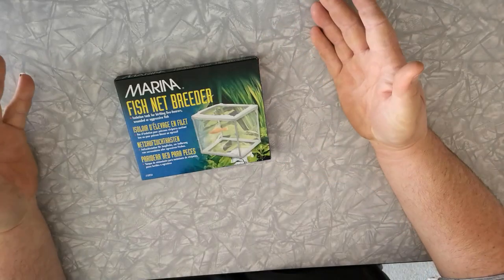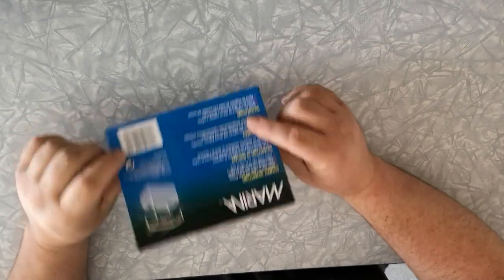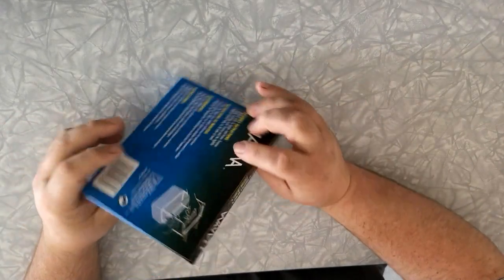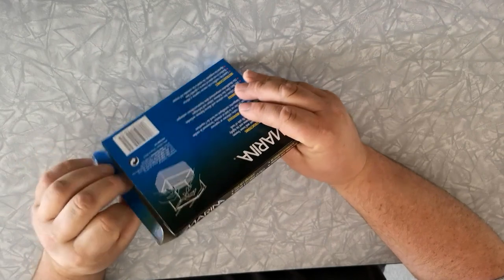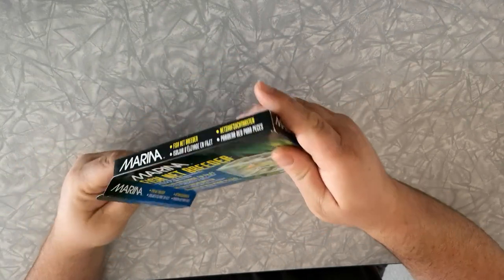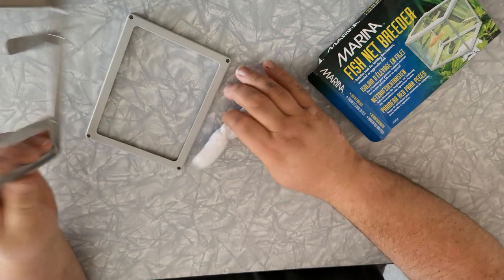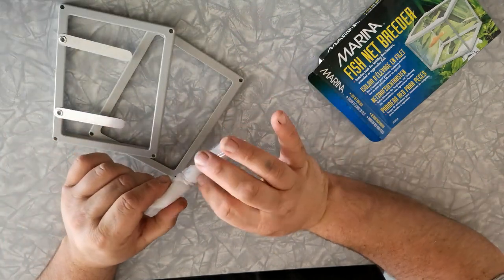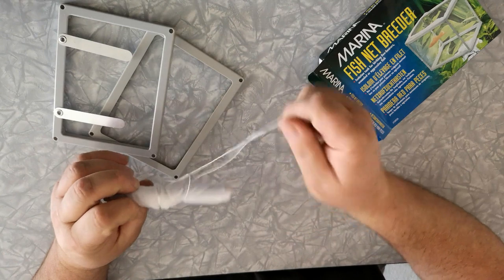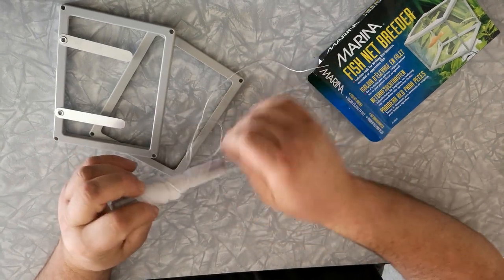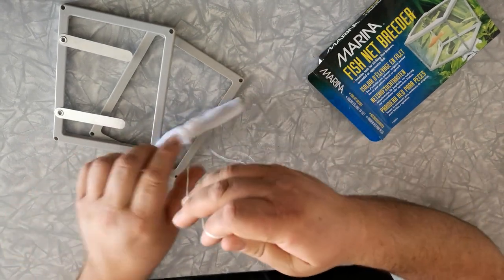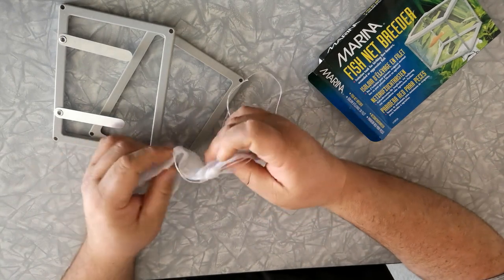All right, Marina Fish Net Breeder. Comes in pretty thin, let's crack her open. One, two, three bits, some netting. Pretty simple design, really didn't expect too much more to be fair.